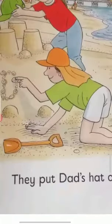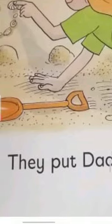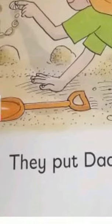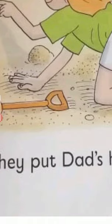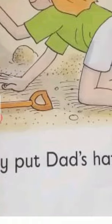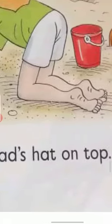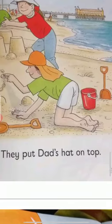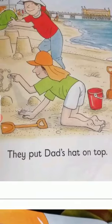Now we are going to start the reading. The first word is a sight word, so we are going to read it as it is. They put Dad's hat on top. Read it with me: they put Dad's hat on top. One more time: they put Dad's hat on top. Very good.